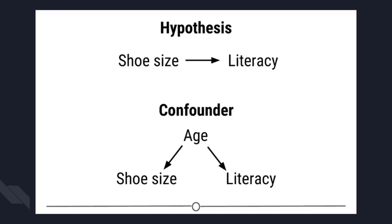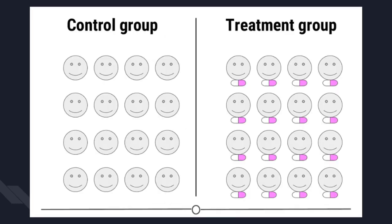A confounder is an extraneous variable that may affect the relationship between the dependent and independent variables. In our example, since age affects foot size and literacy is also affected by age, if we see any relationship between shoe size and literacy, that relationship may actually be due to age — age is confounding our experimental design. To control for this we can measure the age of each individual and take into account its effects on literacy, or we could fix the age of all participants so that age has been removed as a possible effect.